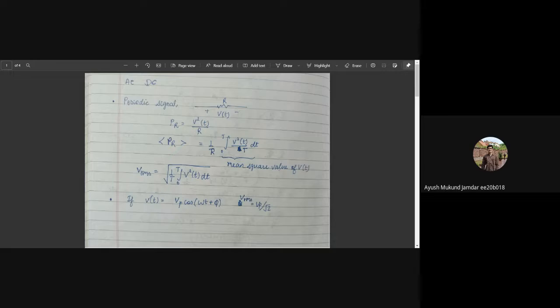If we have a sinusoidal voltage, VP cos omega t plus phi, the cos squared term on integration will give half, and VRMS will turn out to be the peak voltage VP divided by square root 2. So VP by root 2 is the RMS voltage for the sinusoidal signal.